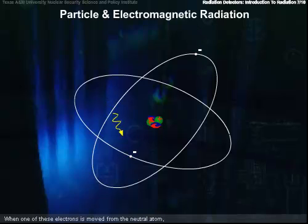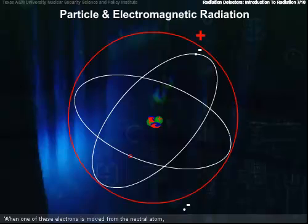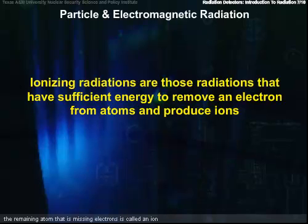When one of these electrons is removed from the neutral atom, the remaining atom that's missing electrons is called an ion. Ionizing radiation is thus defined as those radiations that have sufficient energy to remove electrons from atoms and produce ions.